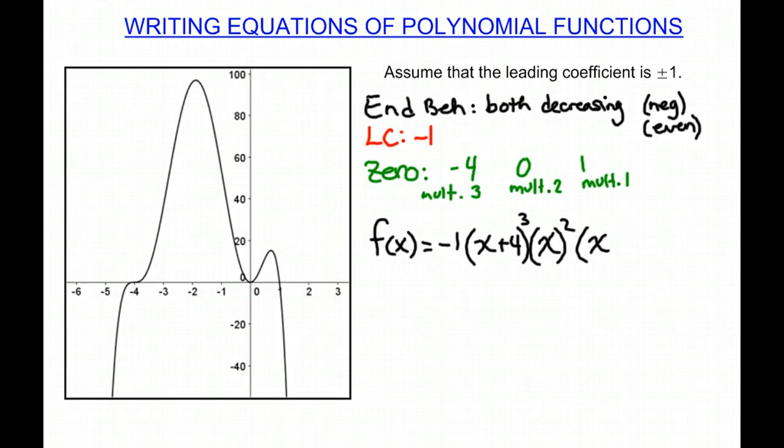And then we have x minus 1, and there's multiplicity of 1 there. So I'm going to rewrite this equation, simplify it a little bit, because I don't like that, where it's x and then squared. So I'm going to actually write it as f(x) equals negative x squared, because I've just distributed the negative there, and then times by x plus 4 cubed and x minus 1. And that is our equation for the graph.